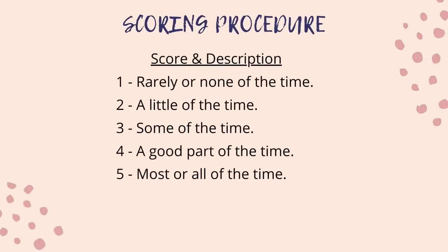The scoring description is as follows: 1 is marked as 'Rarely or None of the Time.' 2 is 'A Little of the Time.' 3 is 'Some of the Time.' 4 is 'Good Part of the Time.' 5 is 'Most or All of the Time.'